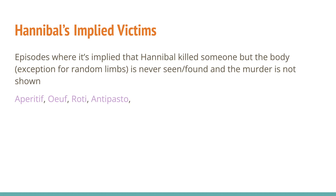Hannibal's implied victims are episodes where it's implied that Hannibal killed somebody, but the body — with the exception of random limbs — is never seen or found, and the murder is not shown. These include Aperitif, Roti, and Antipasto. I started tracking this because in Aperitif, Hannibal is hosting dinner and when guests ask about the meat, he makes a cannibal joke, then it flashes to someone being chased through the woods, implying Hannibal chased a guy, killed him, cooked him, and served him. The rest are along those lines.